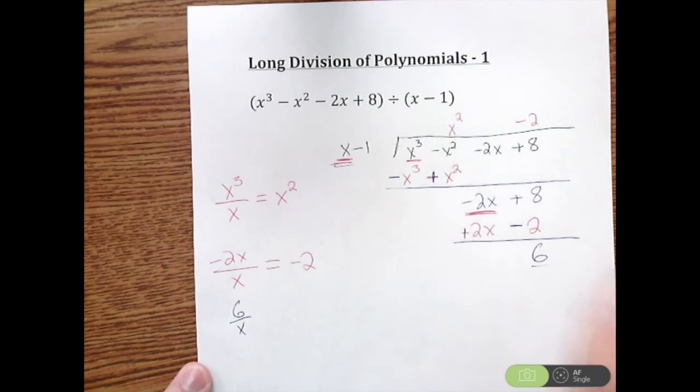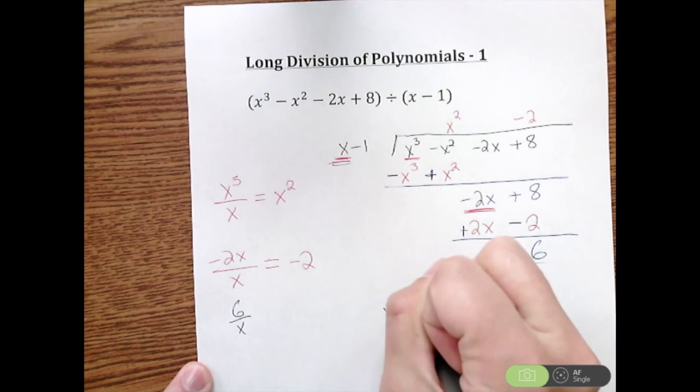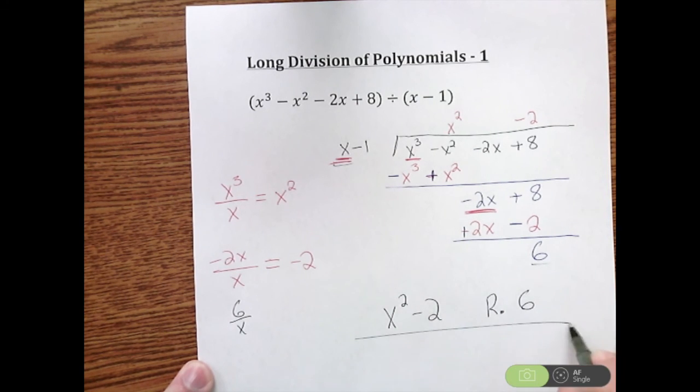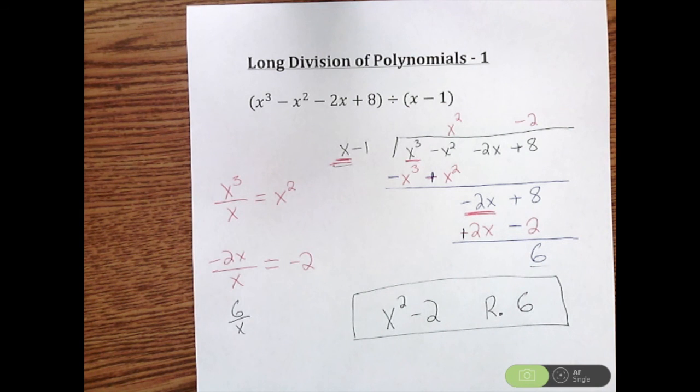So our answer here is we're going to have X squared minus 2 is our answer. And whatever we have left when we're done doing this entire process, that is our remainder. So I'll put R 6. So X squared minus 2 with the remainder of 6 is the answer when we do this long division of a polynomial.